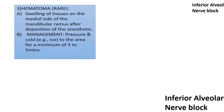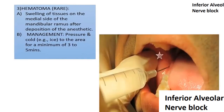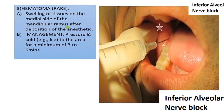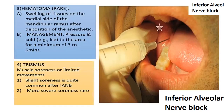Hematoma is also a complication — a swelling of tissue on the medial side of the ramus after deposition of the anesthetic. Management involves applying pressure and cold, for example ice applied to the area for a minimum of 3 to 5 minutes. Another complication is trismus, which involves muscle soreness or limited mouth opening.